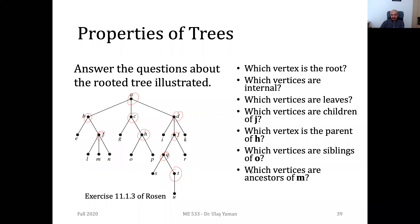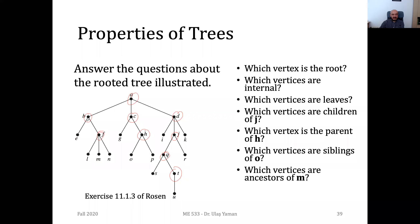Which vertices are the ancestors of M? M is here. F, B, and A are all ancestors of M. N and L are siblings. F, B, and A are ancestors of M. We cannot say anything directly about E, but as a child of B, it is a child of one of the ancestors of M.